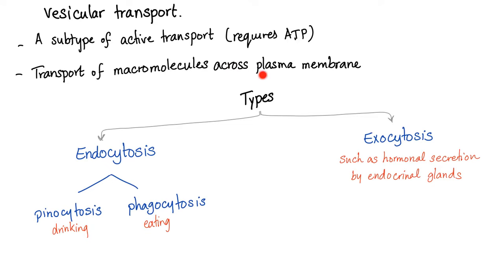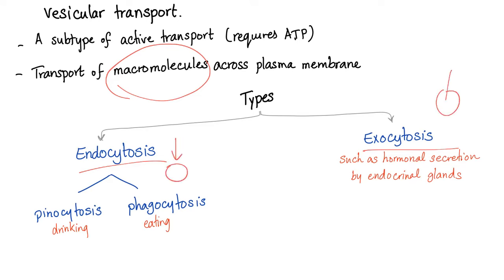Vesicular transport is defined as the transport of macromolecules across the plasma membrane. It has two types: endocytosis, coming into the cell, and exocytosis, going outside of the cell. Endocytosis has two subtypes: pinocytosis, also known as cell drinking, and phagocytosis for larger particles, also known as cell eating. For example, the thyroid gland secretes thyroxin by exocytosis.